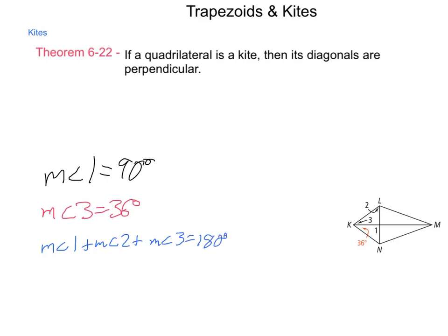Angle 1 is not actually in this triangle, but it is equivalent since this is a perpendicular intersection. Using substitution, 90 degrees plus the measure of angle 2 plus 36 degrees equals 180 degrees. By the subtraction property of equality, subtracting 90 degrees and 36 degrees, the measure of angle 2 is 54 degrees.